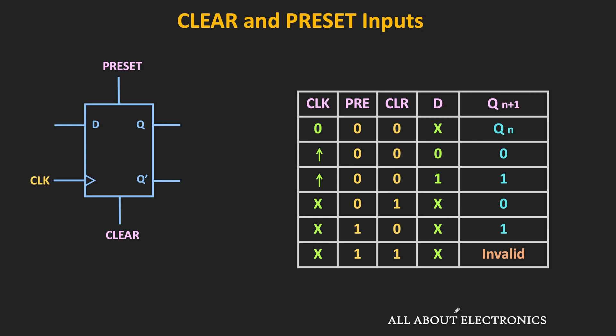Whenever either preset or the clear input is high, that input will overwrite the other inputs. When the clear input is high, then regardless of the clock signal and the D input, the output of the flip-flop will become low. Similarly, when the preset input is high and the clear input is low, then regardless of the other inputs, the output of the flip-flop will become high. But these two inputs should not be active at the same time — the last input condition is the invalid input condition. That is the truth table of the D flip-flop with the preset and the clear inputs.